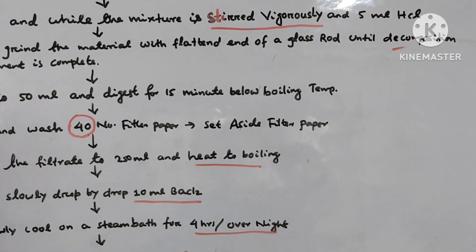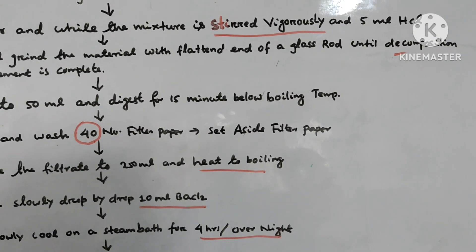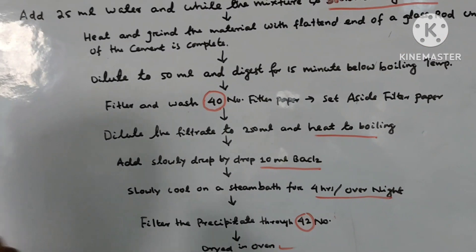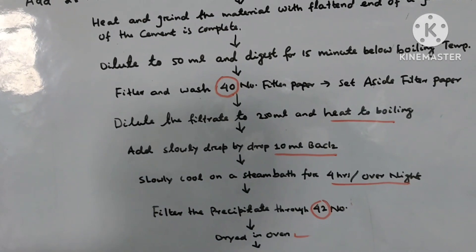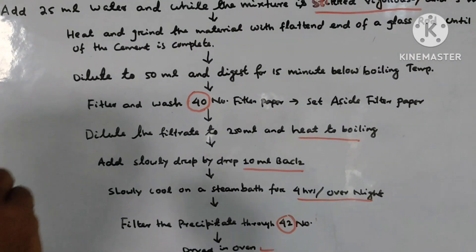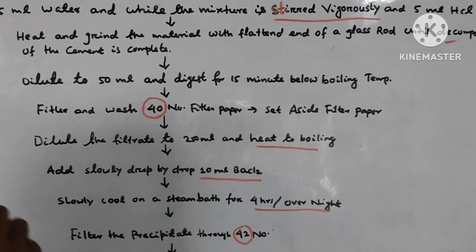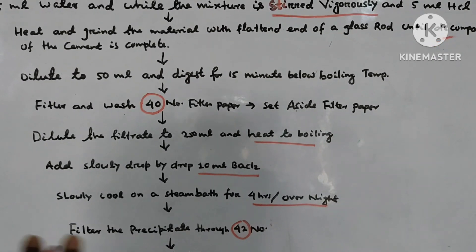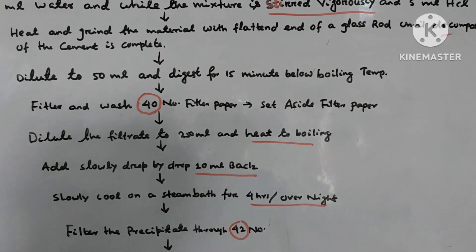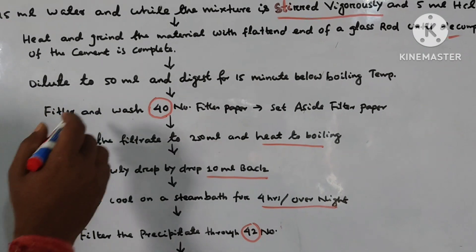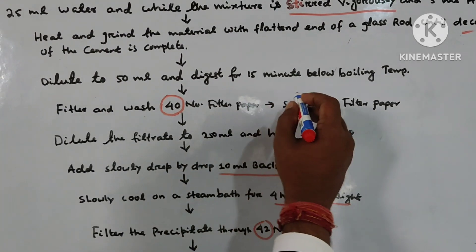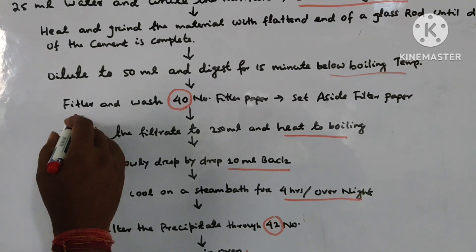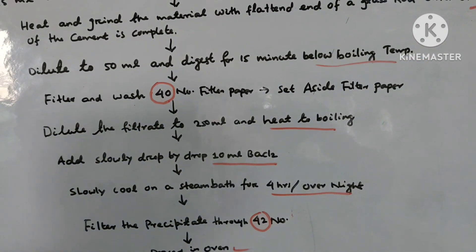Decomposition or dissolution of particles must be complete for proper analysis. If decomposition is not complete, the analysis will not be done properly. The flat-end glass rod is used for decomposition of cement particles. Then dilute to 50 ml and digest for 15 minutes below boiling point.